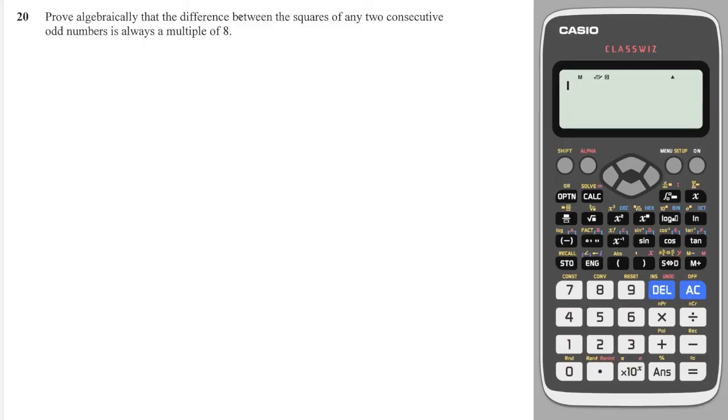Prove algebraically that the difference, so difference means subtraction, between the squares of any two consecutive odd numbers. Let's define first what an odd number is. Let's call it 2n plus 1. Any even number is 2n, any odd number is 2n plus 1. And we want the squares of these. The next number along, because it says two consecutive square odd numbers, will be 2n plus 3, because obviously 2n plus 2 will be even.